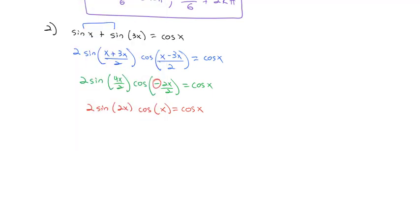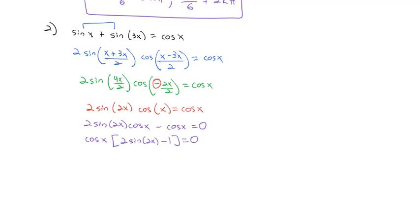Now we have something we can solve. Subtracting cos(x) from both sides: 2·sin(2x)·cos(x) − cos(x) = 0. Factoring out the common factor gives cos(x)·(2·sin(2x) − 1) = 0. That tells us either cos(x) = 0 or sin(2x) = 1/2.